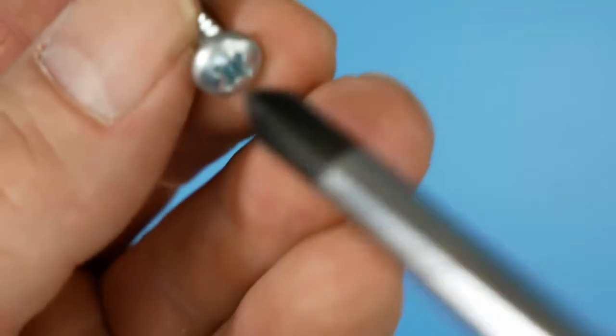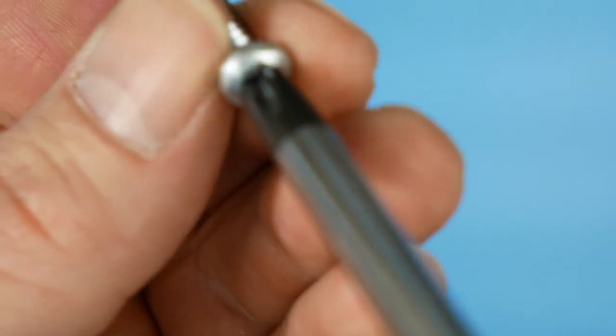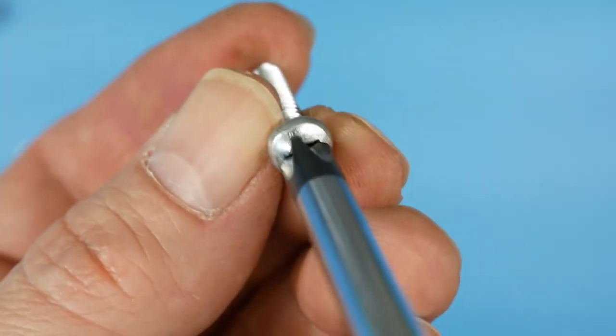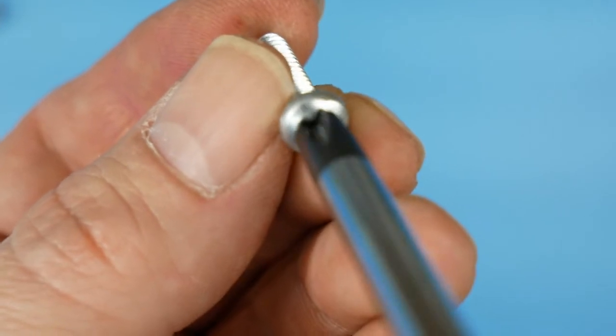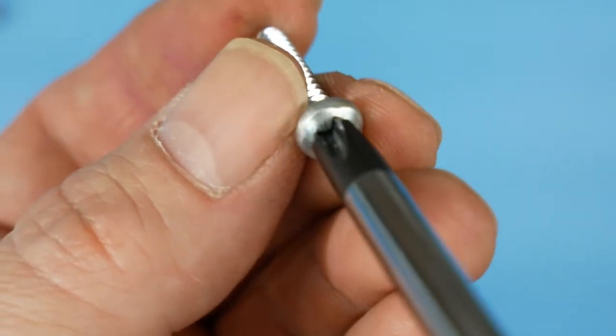The JIS however seats pretty well in a Phillips. You can definitely use a JIS with Phillips.